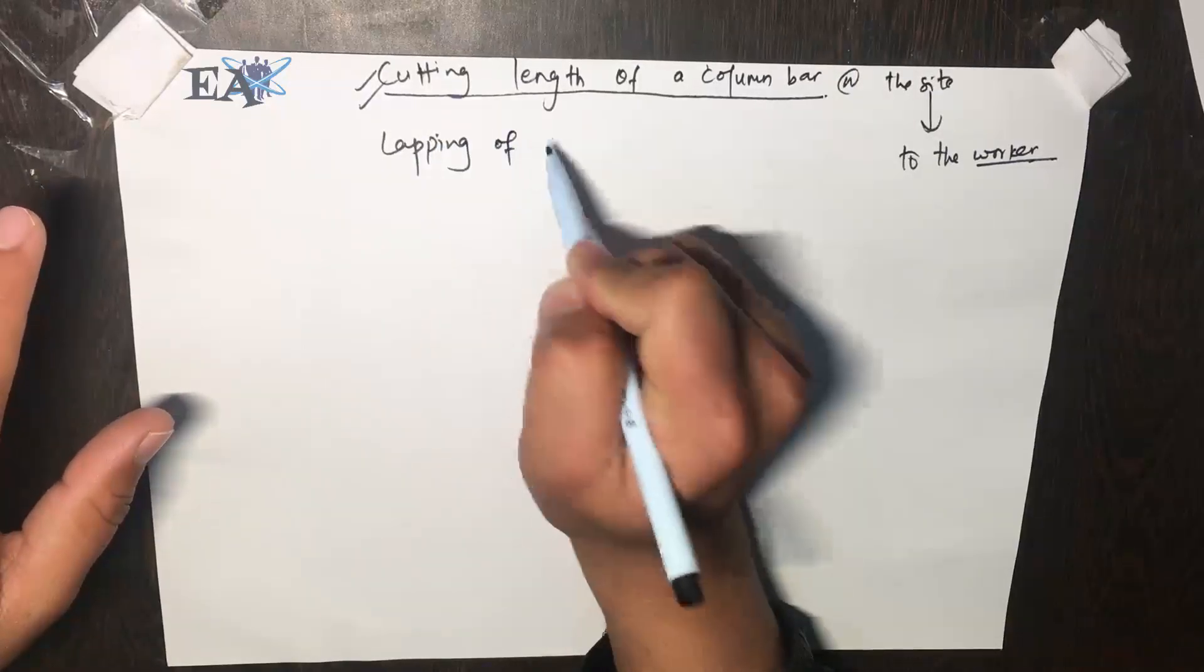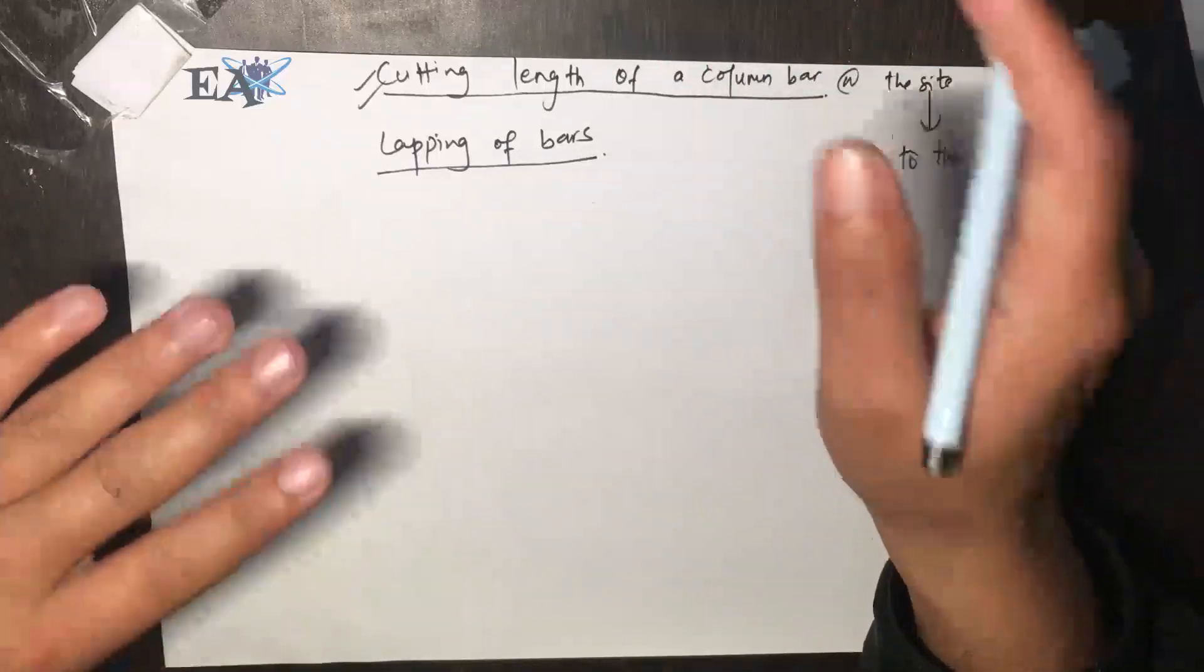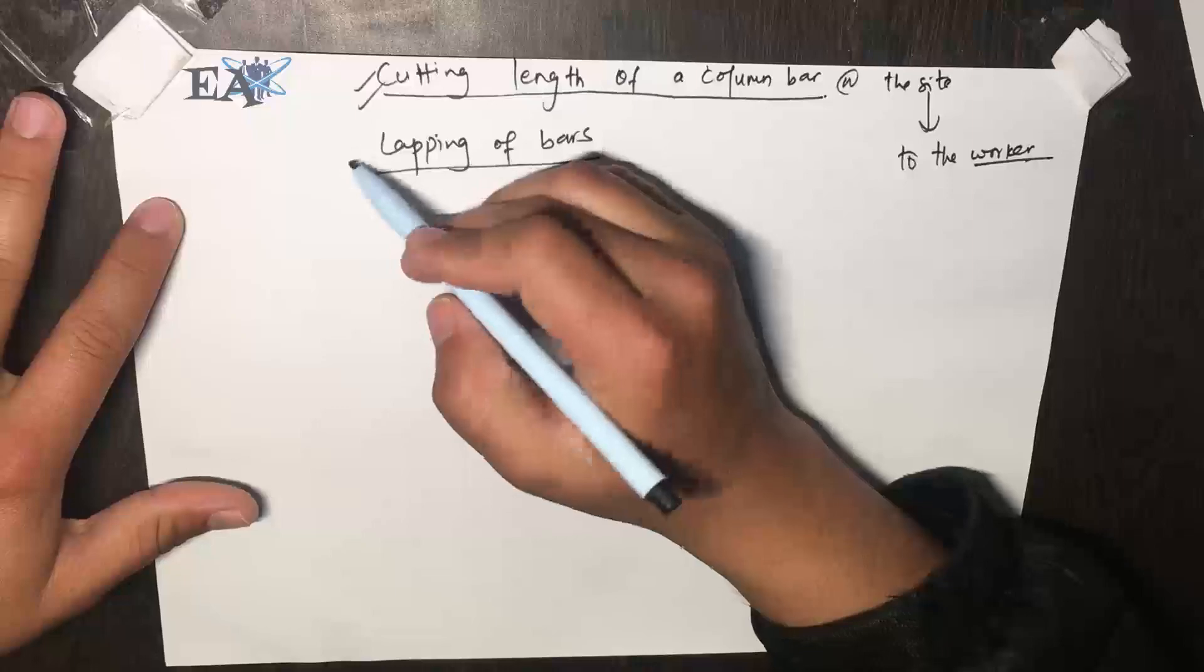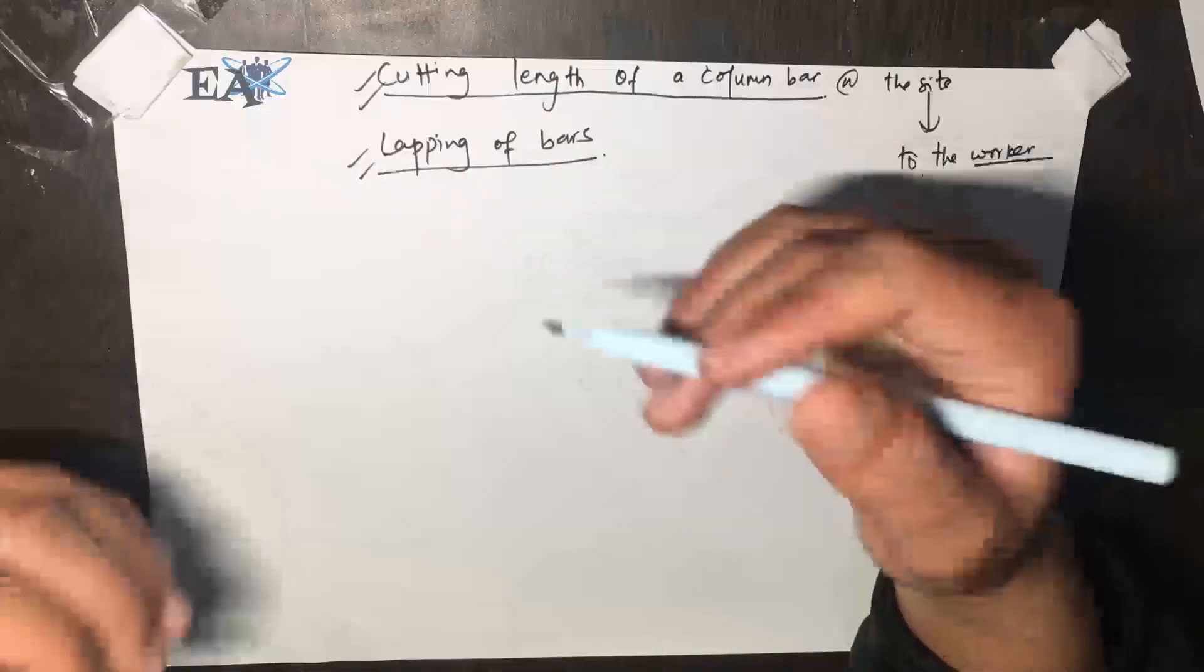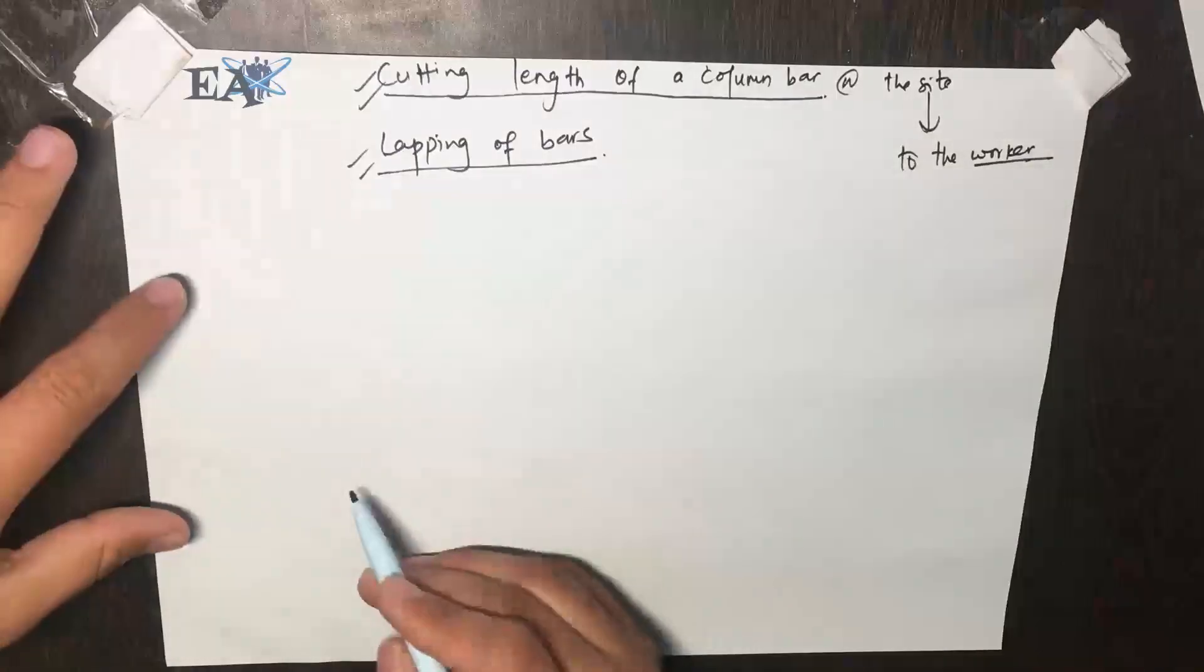Where is the proper position for the lapping of bars and how should we lap them? I have already talked about this topic and we know why we need to lap the bars. If we had a long bar of any size, we could have taken the bar from footing up to the top of a building without any problem and we wouldn't have needed to lap any bars.